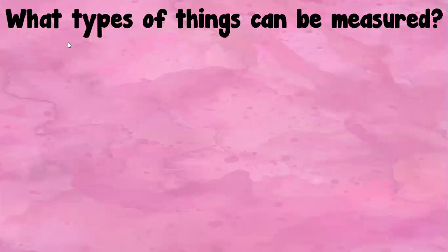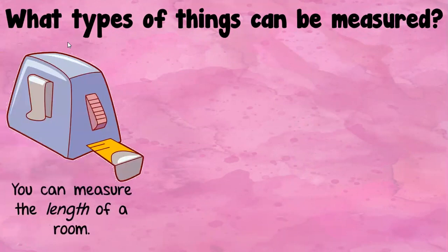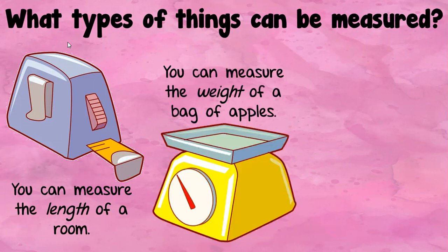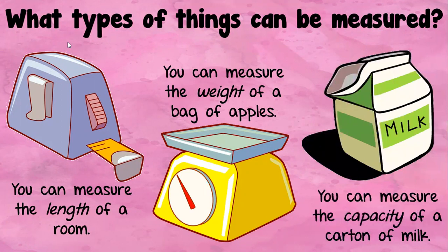So it says what types of things can be measured? We know that we can measure length — for example, we can measure the length of the room. We can measure weight; they have a scale here and an example of weighing a bag of apples. You can also measure something called capacity. They have an example here: you can measure the capacity of a carton of milk. Length and weight you are familiar with; capacity is probably a newer concept, and we're going to take a moment to talk a little bit more about it.